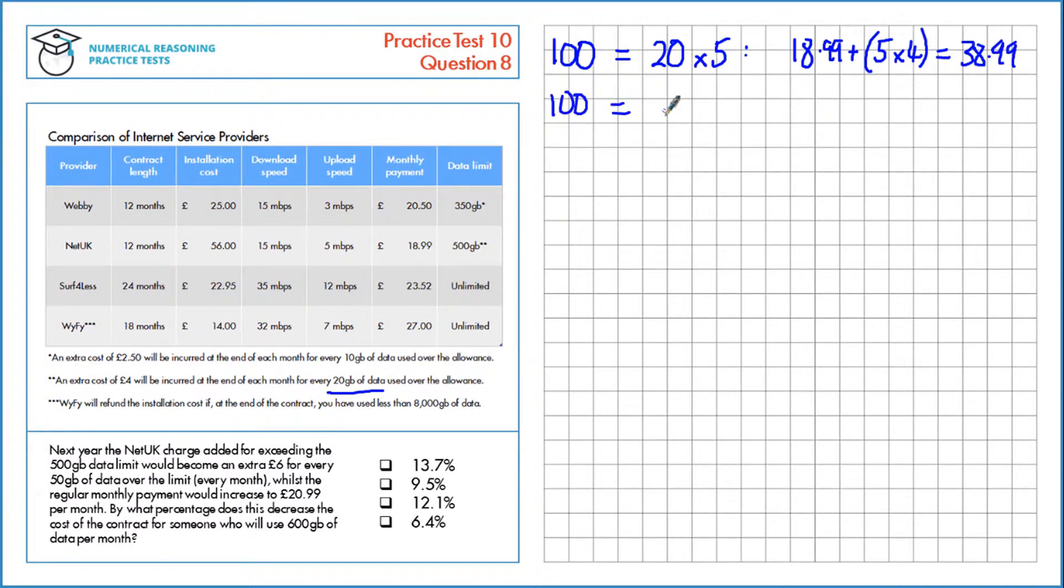Under the new plan, 100GB is 50GB times 2, since that's the limit for extra charges, and the new cost is £20.99 per month. So we've got 2 lots of the extra charge of £6, which is £32.99 in total.